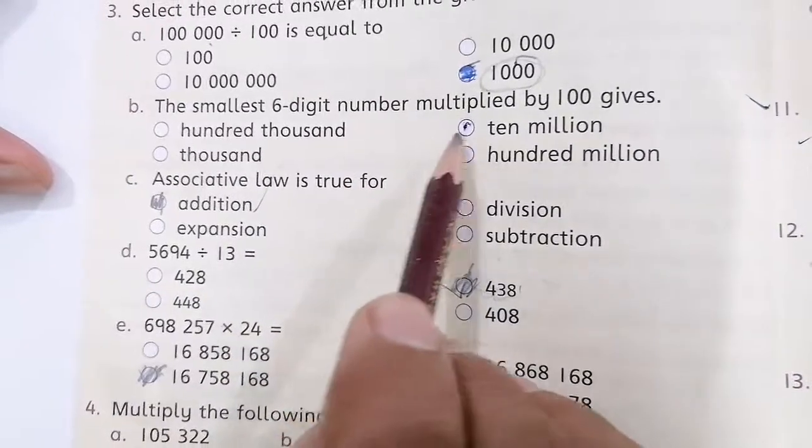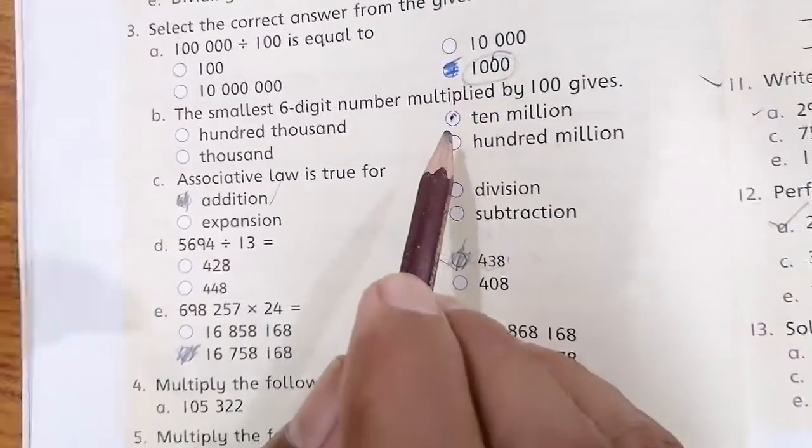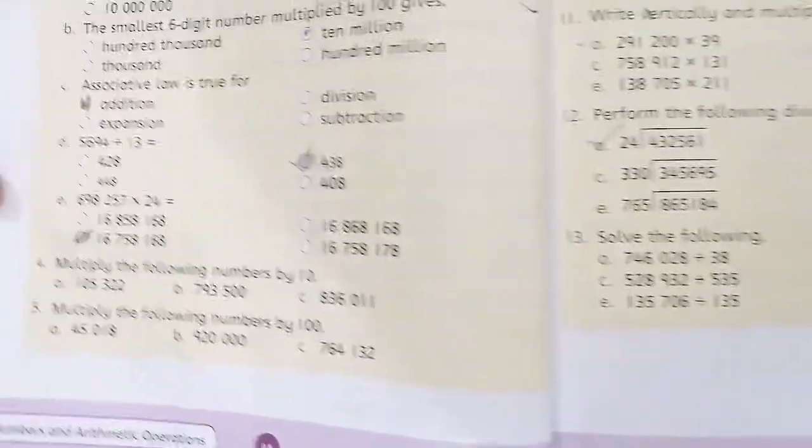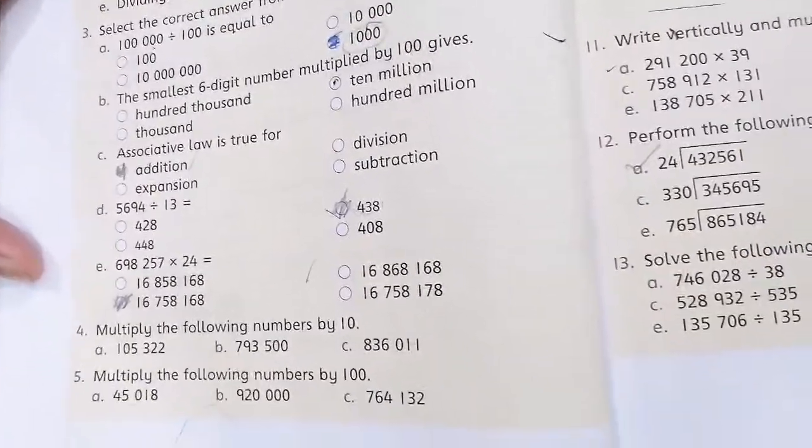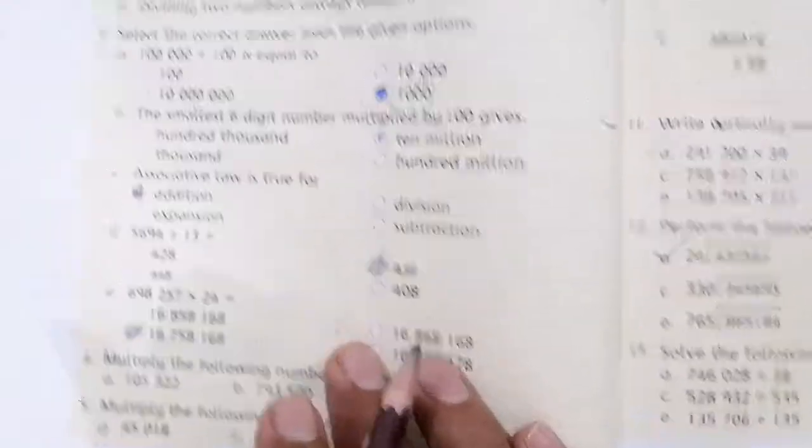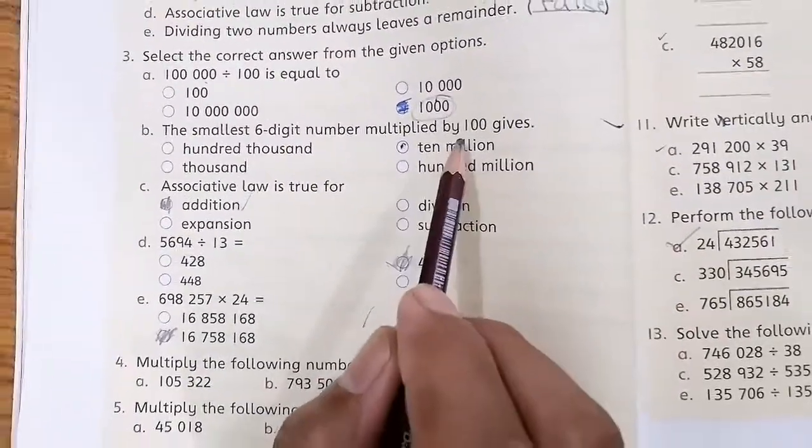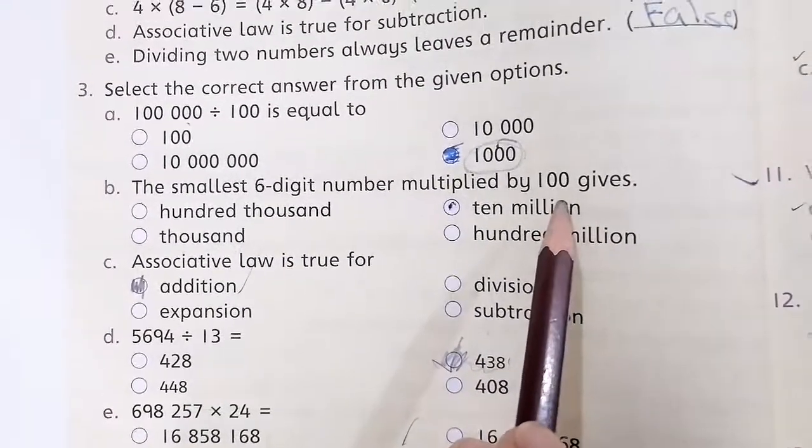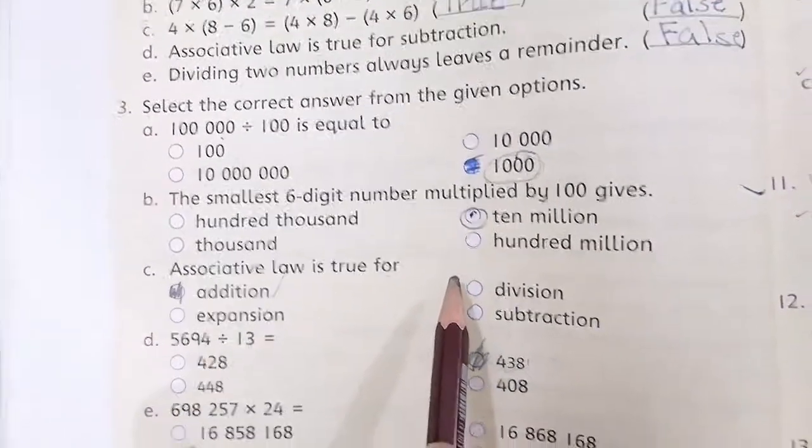Then, smallest six digit number multiplied by 100. The smallest six digit number is 100,000. The number is equal to 10 million.